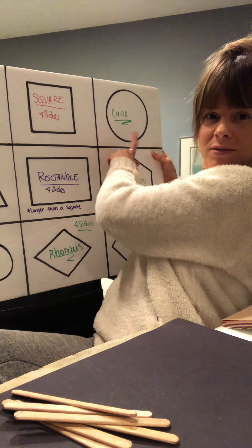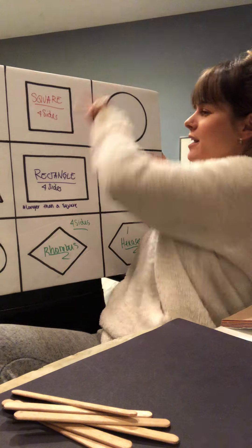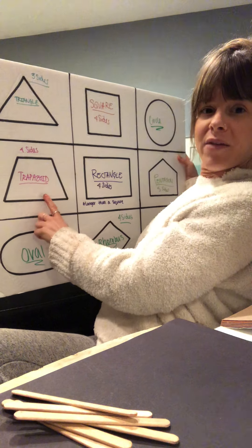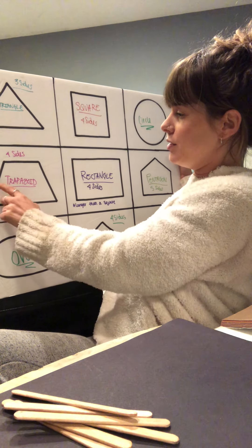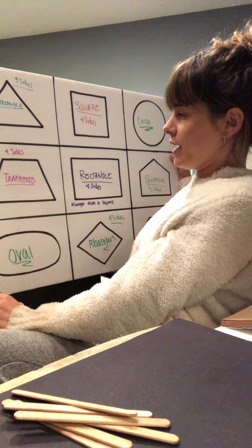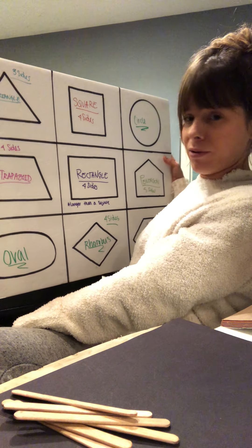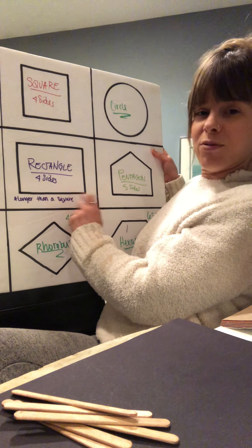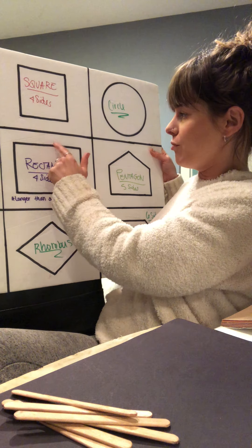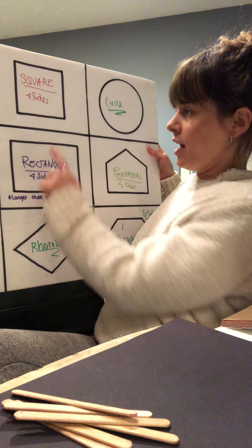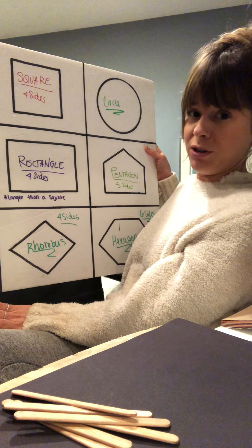Then we have a circle. The circle doesn't really have sides — it's just one side in a circular shape. Then we have a trapezoid right here. That has one, two, three, and four sides, and two of the sides are kind of going up in an angle. Then we have our rectangle here. That has one, two, three, and four sides, and the top and bottom sides are much longer than the other two sides.